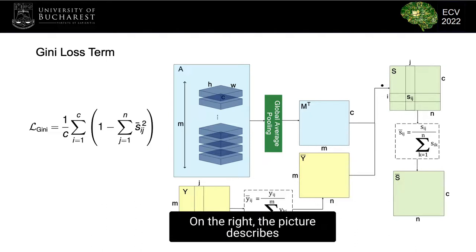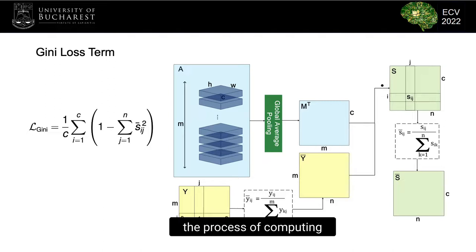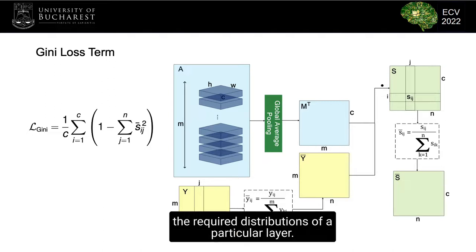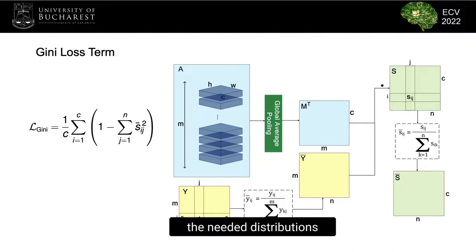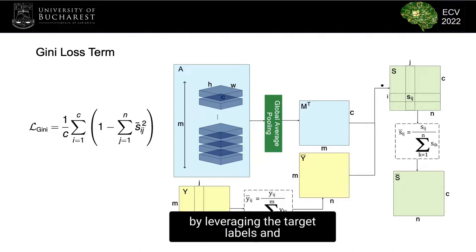On the right, the picture describes the process of computing the required distributions of a particular layer. We start from the activation maps and reach the needed distributions by leveraging the target labels and the activation levels of each example in the batch.